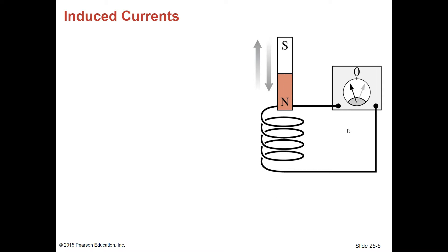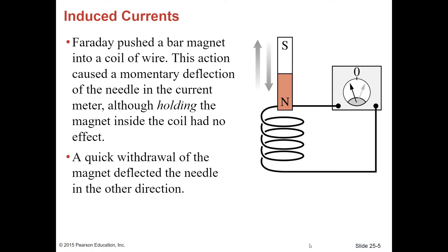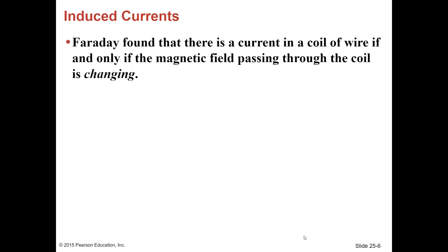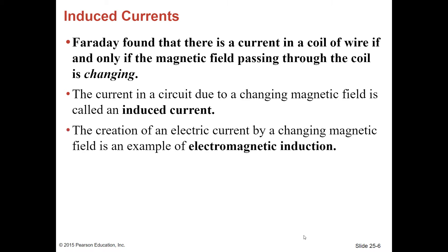Take a look — you've got the coil, the bar magnet, and an ammeter, or current meter. Faraday pushed a bar magnet into a coil of wire. This action caused a momentary deflection of the needle in the current meter, although holding the magnet inside the coil had no effect. When the magnet was moving through, we saw a deflection; when it was stationary, there was none. A quick withdrawal of the magnet deflected the needle in the other direction. Faraday found that there is a current in a coil of wire if and only if the magnetic field passing through the coil is changing. This current is called an induced current, and the creation of an electric current by a changing magnetic field is called electromagnetic induction.